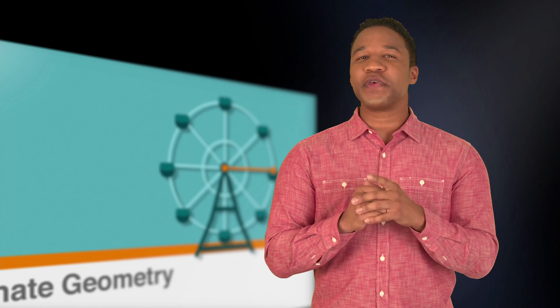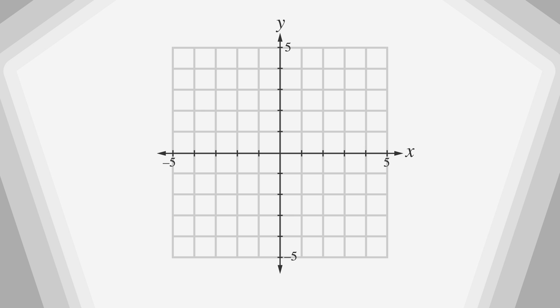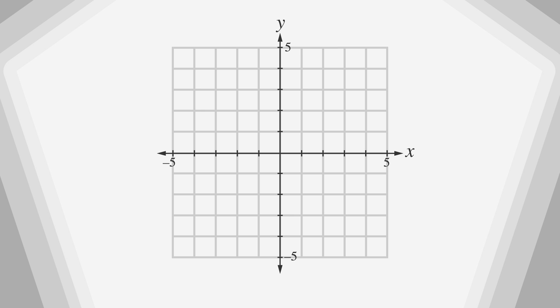So let's get started with a brief review of the coordinate plane. Our xy plane is defined by a horizontal x-axis and a vertical y-axis that meet at the point zero comma zero, which is also called the origin.